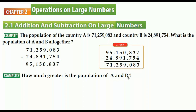Now let's look at another example: how much greater is the population of A than B? Phrases like 'how much greater,' 'how much bigger,' 'how much larger,' and 'how much smaller' are subtraction keywords. The population of A is 71 million 259 thousand 83 and the population of B is 24 million 891 thousand 754, so we are going to subtract.